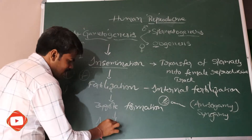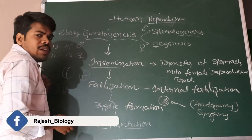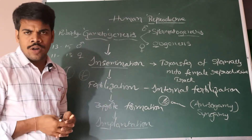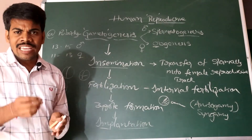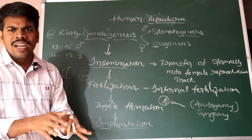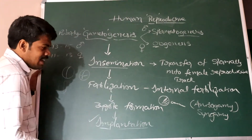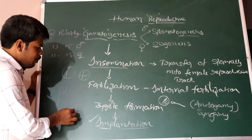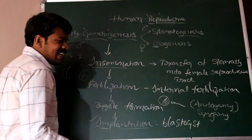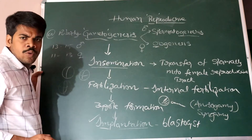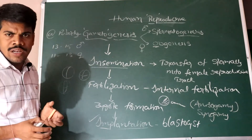After fertilization and zygote formation, the next step is implantation. The embryo, or blastocyst, sends its roots into the uterus wall to get implanted — similar to how a plant is placed in soil. The blastocyst gets implanted in the uterine wall of the female reproductive system. This process is called implantation.